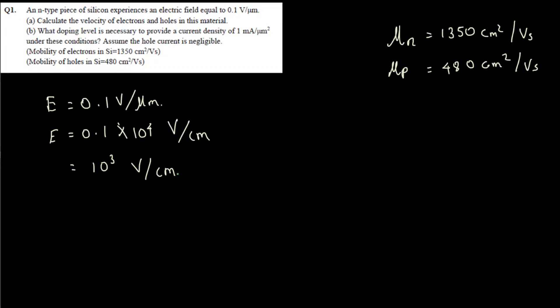For Part A, to calculate the velocity of electrons and holes in this material, we use the drift velocity formula. The drift velocity of electrons, vdn, is given by μn times the electric field E. The electric field is common for both electrons and holes.